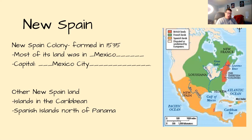New Spain also included many islands in the Caribbean Sea and the Spanish lands north of what is now Panama.